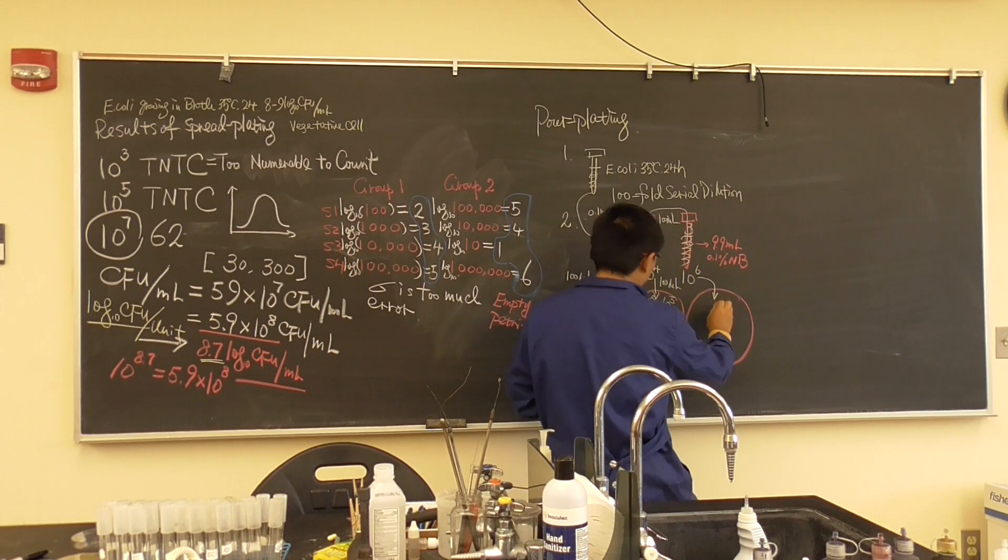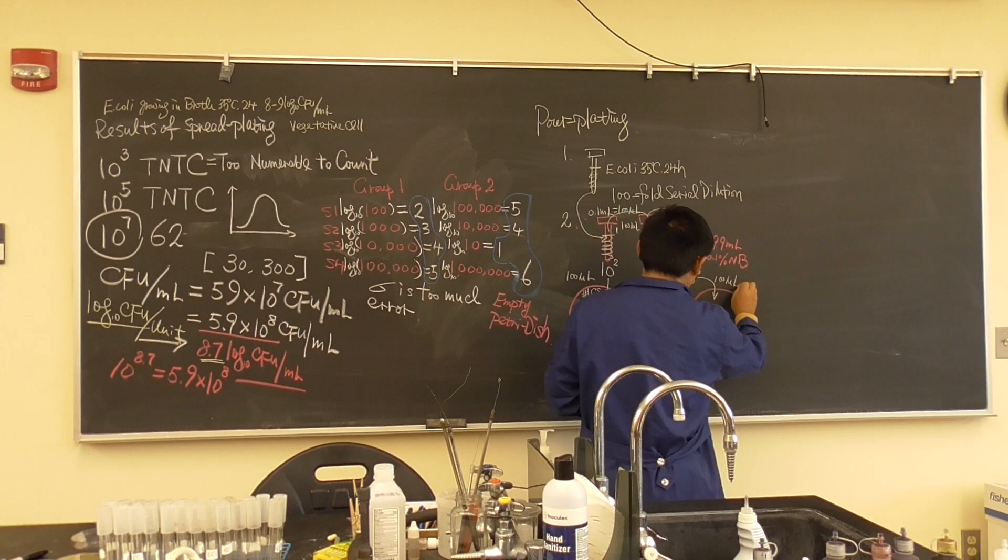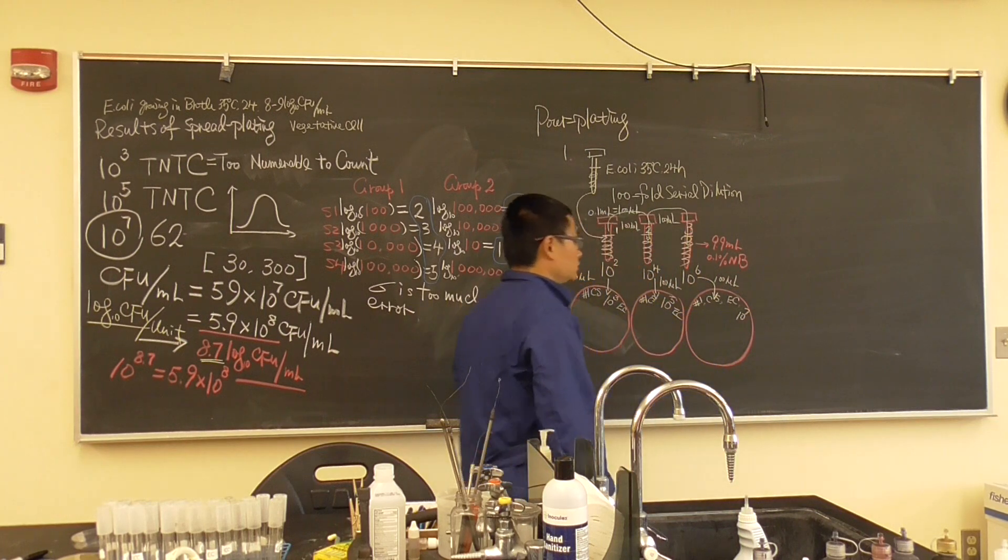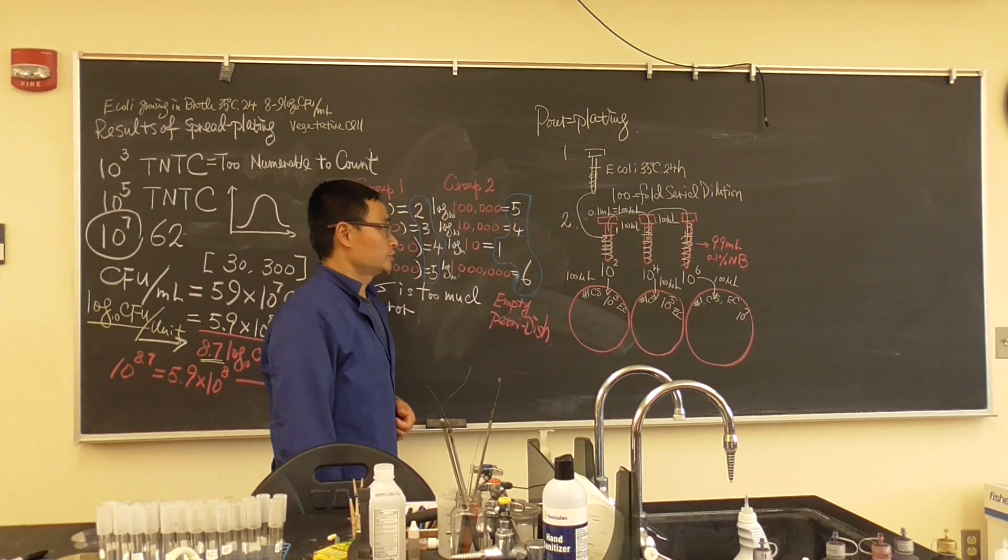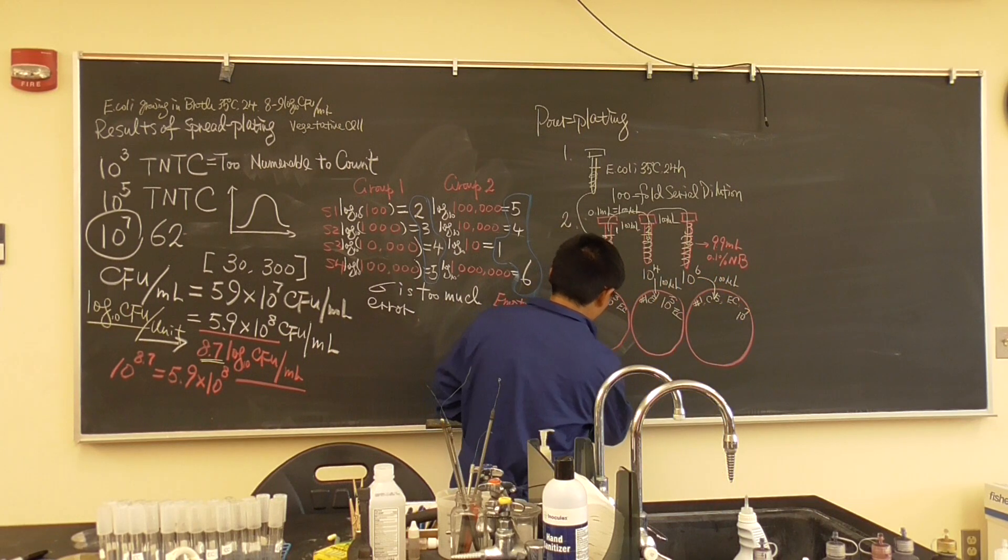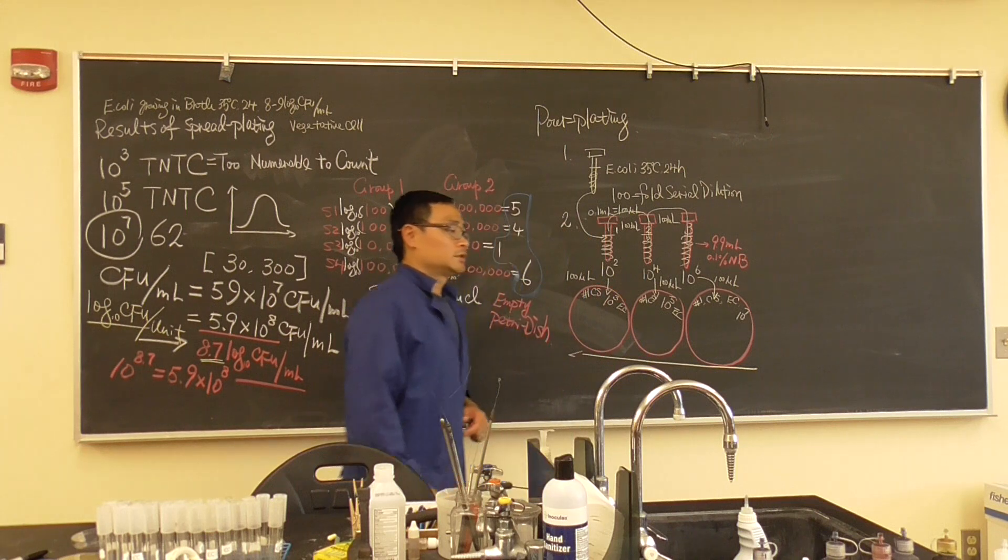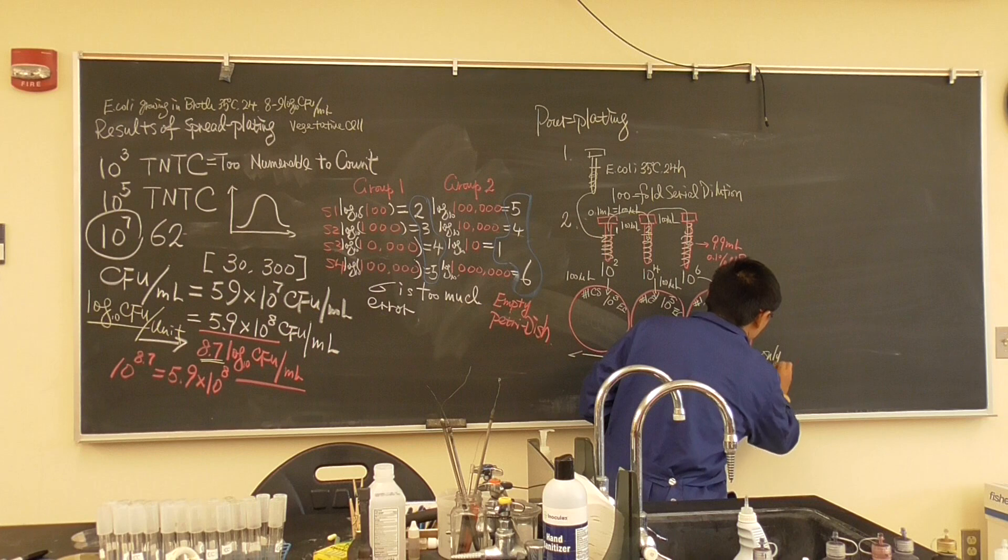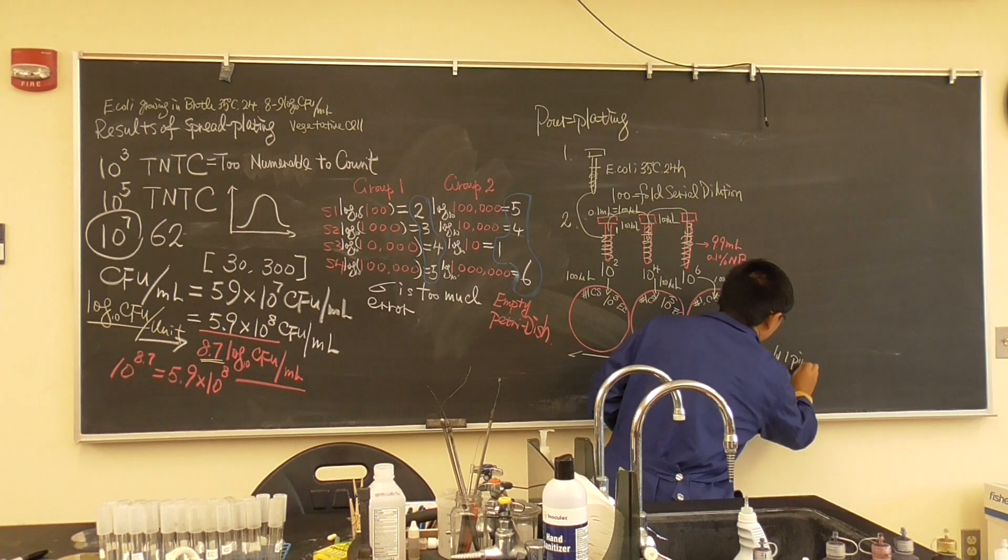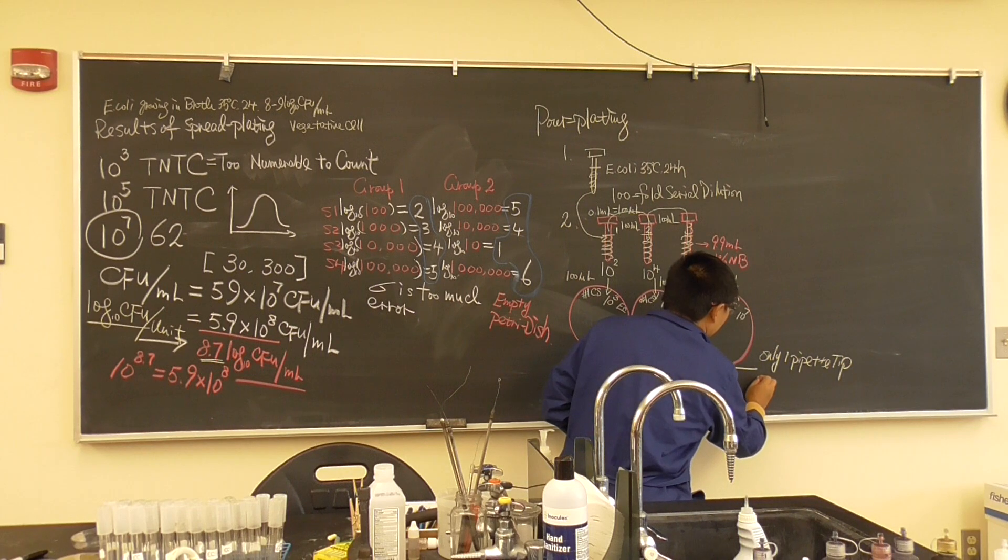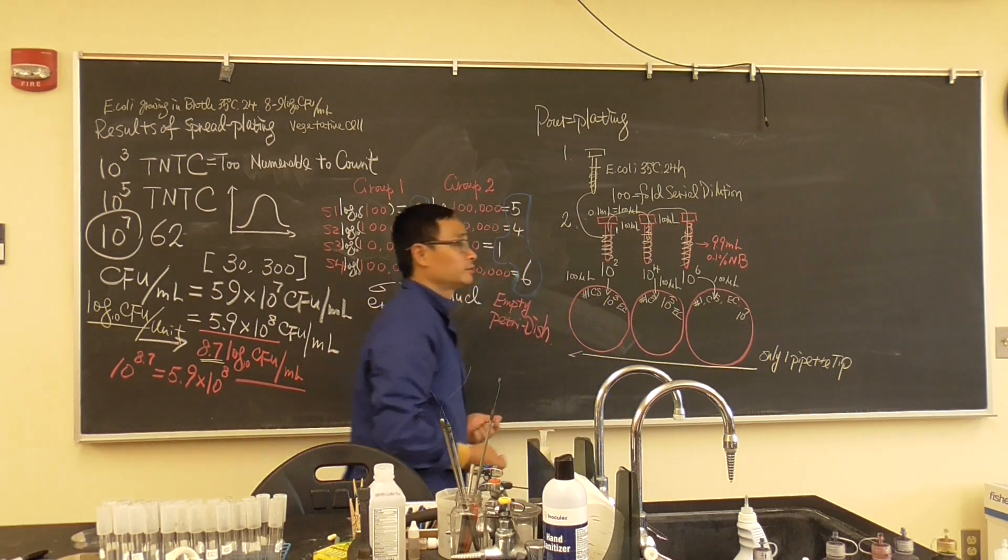Now the last one goes here, 100 microliters. Bench number, initial bacteria name, and the concentration. Oh sorry, the dilution. Same thing, from highest to lowest dilution, only one pipette tip, and yeah, only one pipette tip you added it.